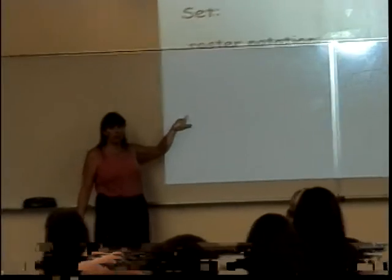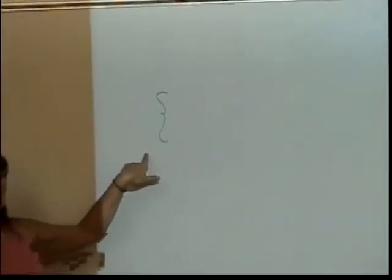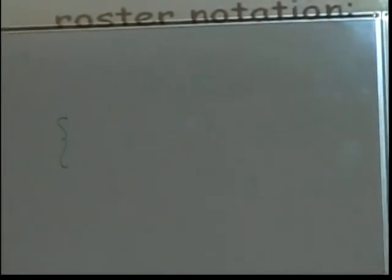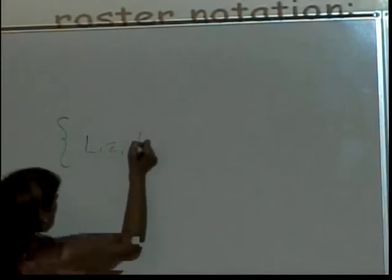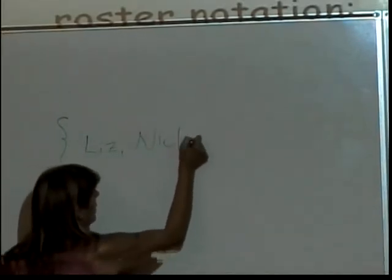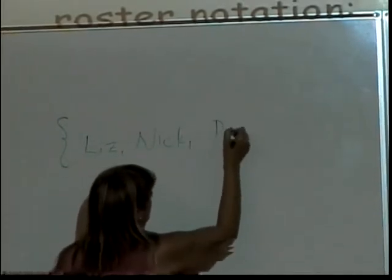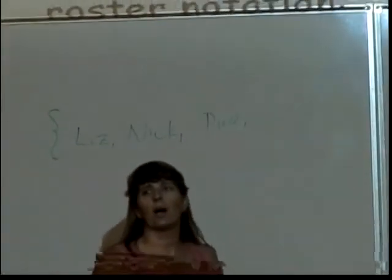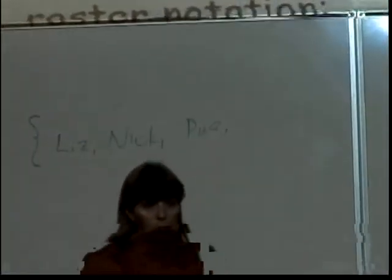You all know where that is on the keyboard? Somewhere fairly close to the enter button. Yeah, just a little bit above the enter button. In roster notation, you basically just write down everything that's in the set. So let's think. I know there's somebody in here named Liz, and Nick, and so on and so forth. I'm not going to write all 38 of you down if that's okay.